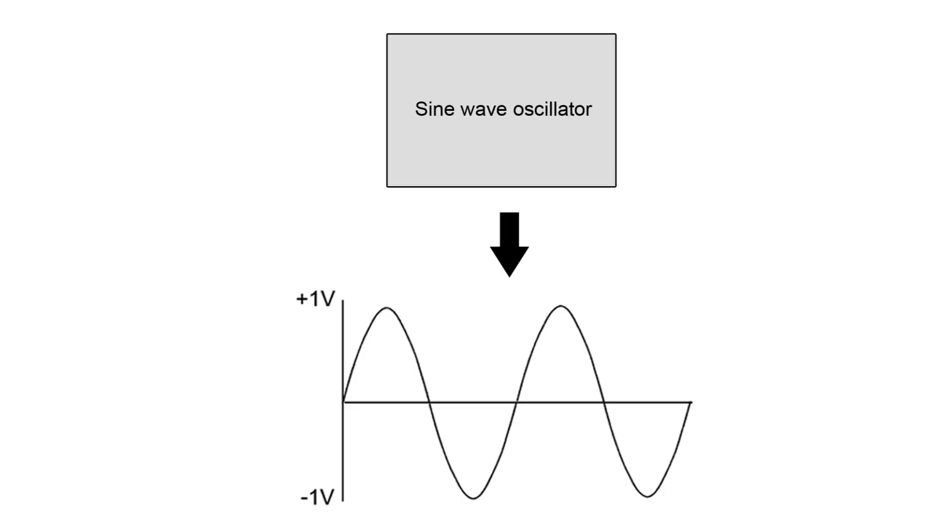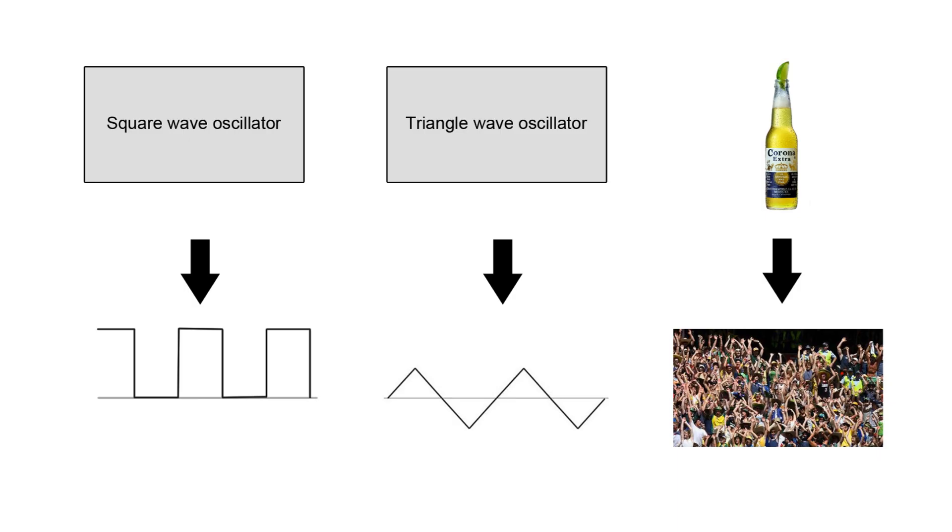An oscillator is a circuit that would generate a repetitive back and forth waveform like this. And just so you know, it doesn't necessarily have to be a sine wave. An oscillator can generate a square wave, triangle wave, Mexican wave, whatever.